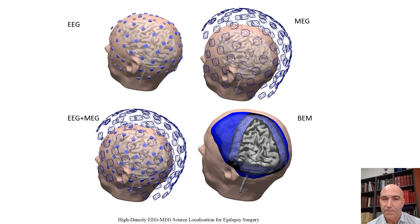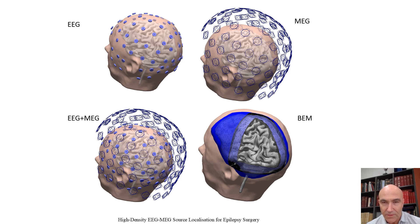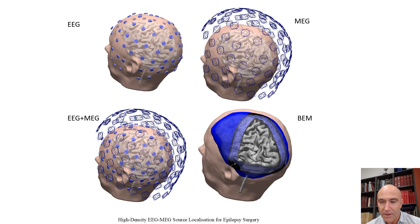Here is the setup: the EEG scalp electrode configuration top left, 94 electrodes including an inferior temporal array; the MEG sensor array of 306 sensors top right; combined spatial arrays of EEG and MEG bottom left; and bottom right is the compartmentalized boundary element method model comprising skin, outer and inner skull layers, and the tessellated cortical mantle.